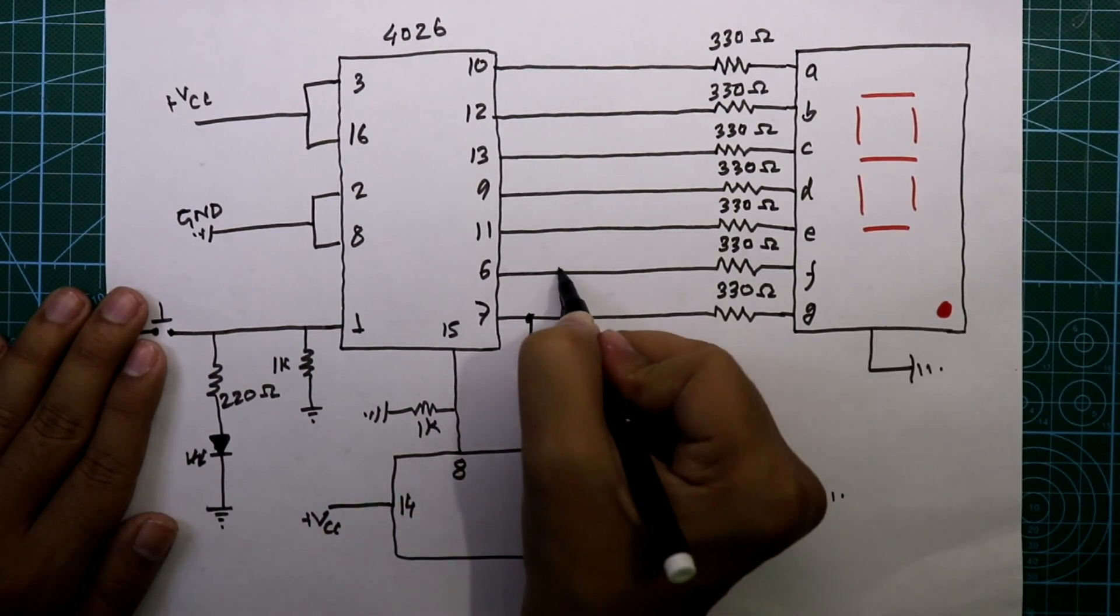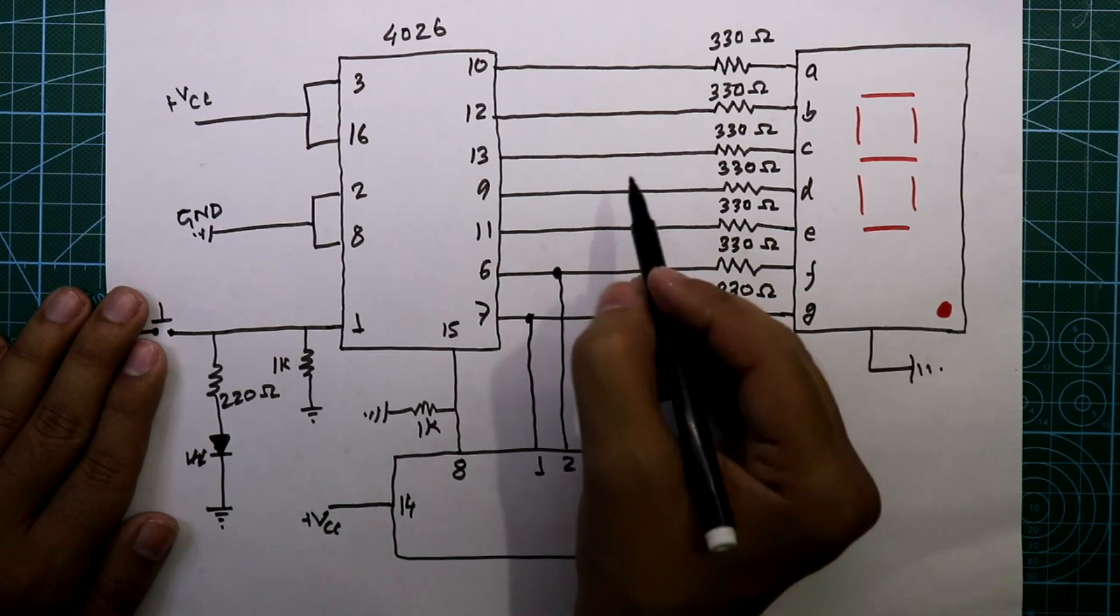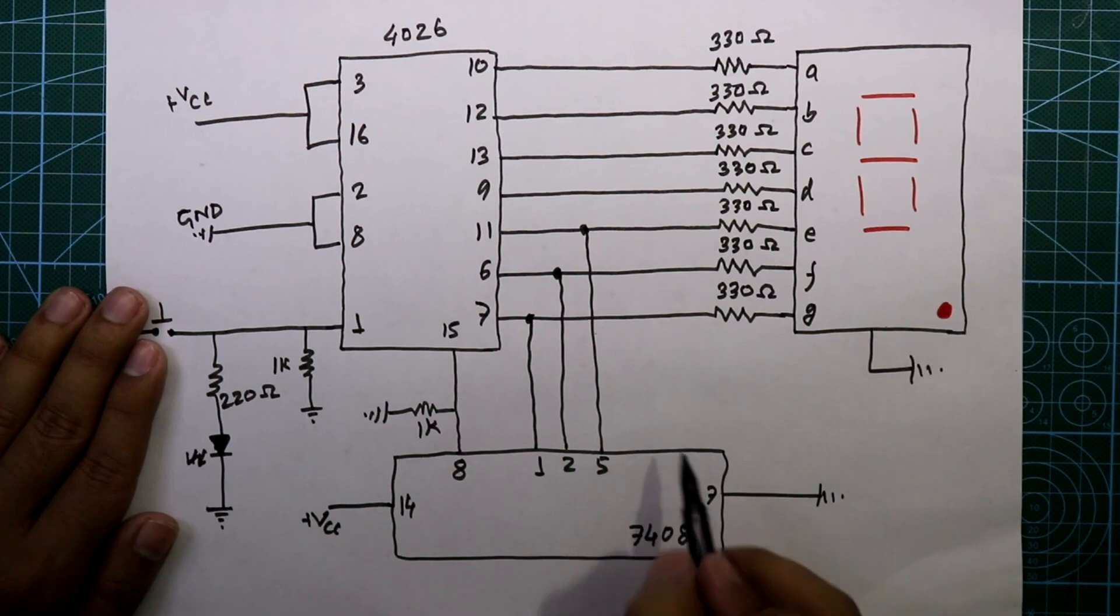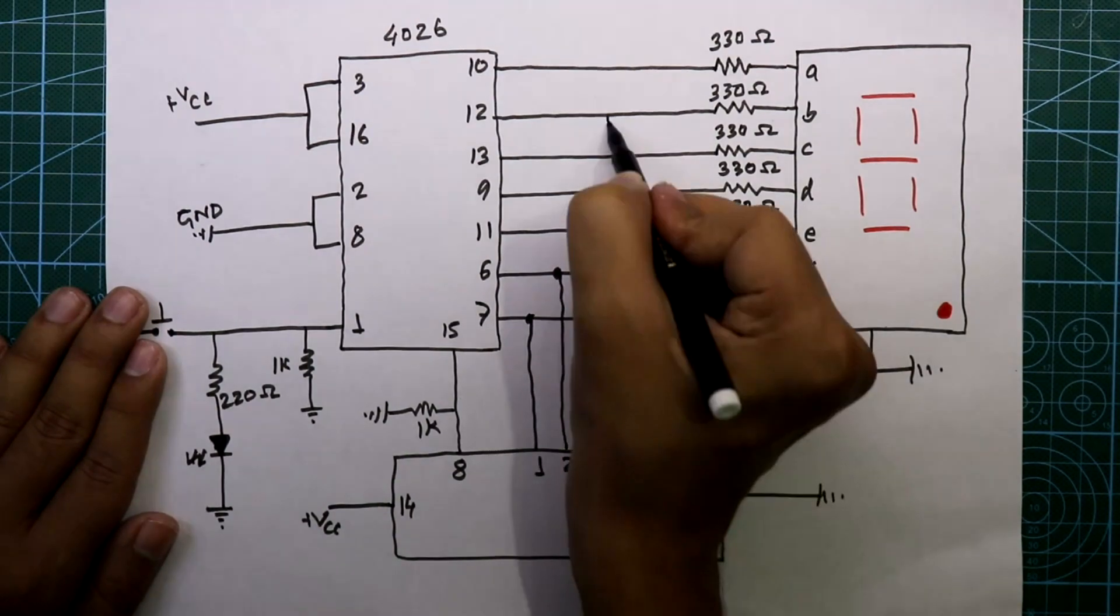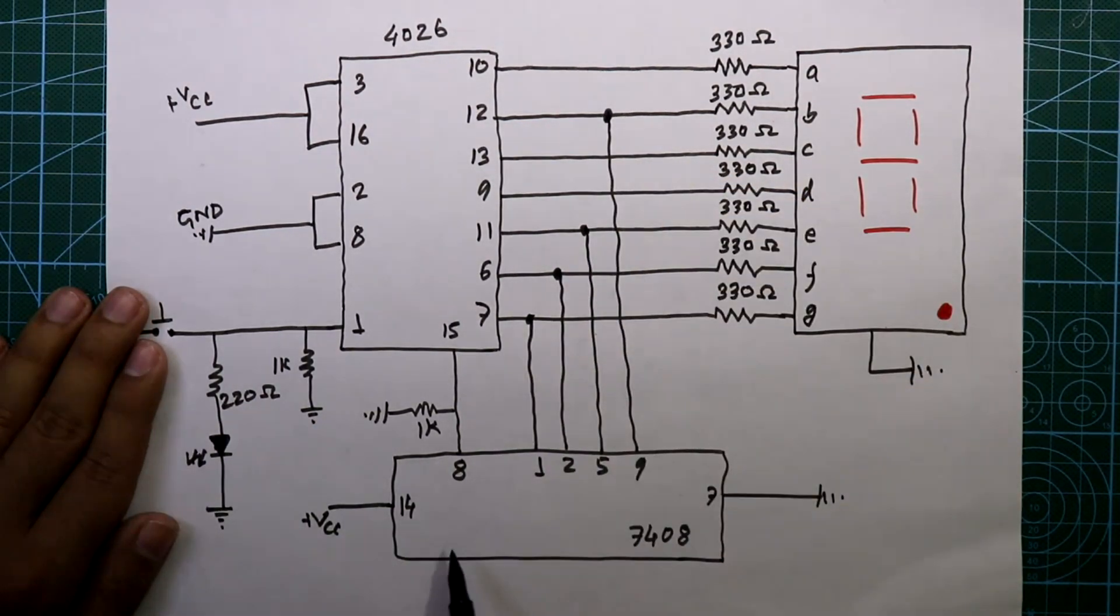Pin number 5 of 7408 is connected to pin number 11 of 4026, and pin number 9 of 7408 is connected to pin number 12 of 4026. Pin numbers 3 and 4 are both connected together, and also pin numbers 6 and 10. Now let's see this on the breadboard.